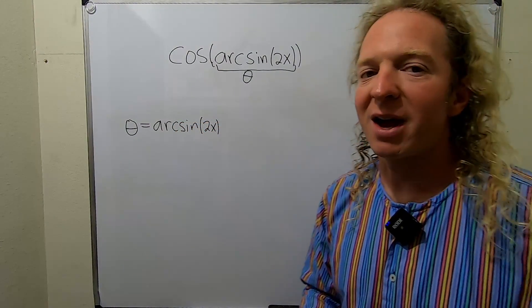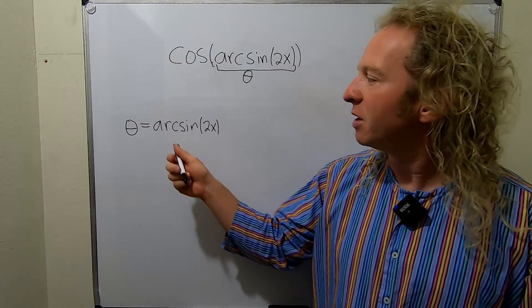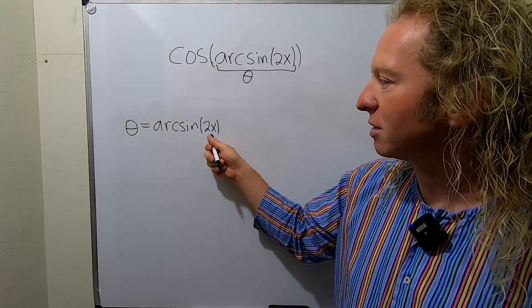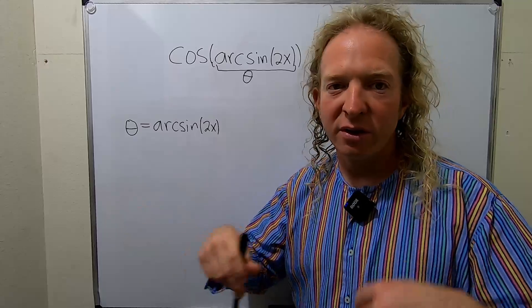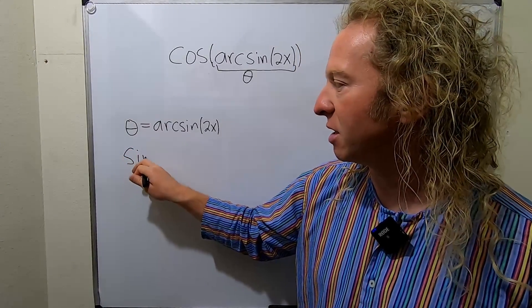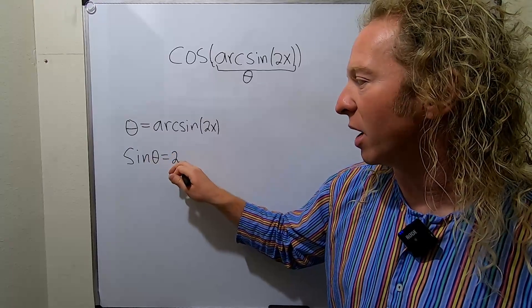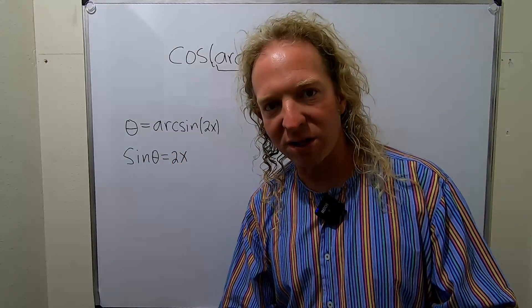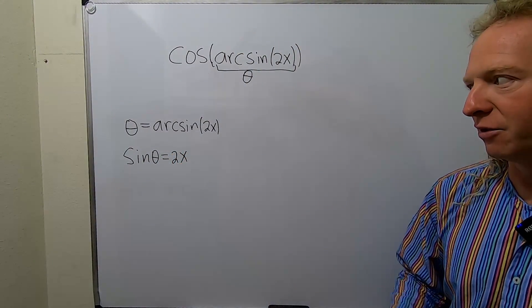Now we use the fact that the arc sine is the inverse sine function. So the arc sine takes 2x and sends it to theta. So the sine function undoes that. So the sine function takes theta and sends it back to 2x. This is because the arc sine and the sine function are inverse functions.